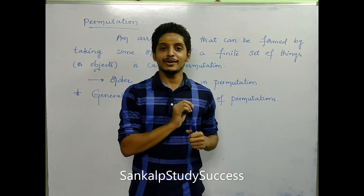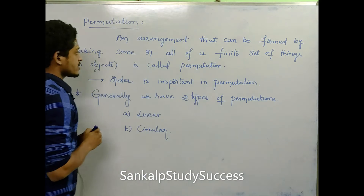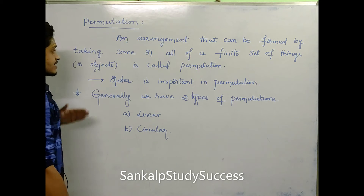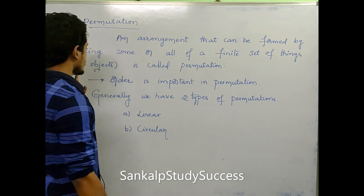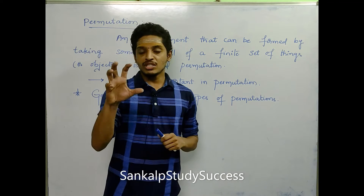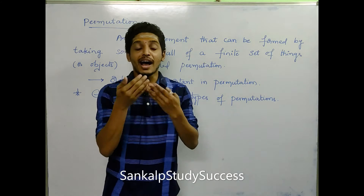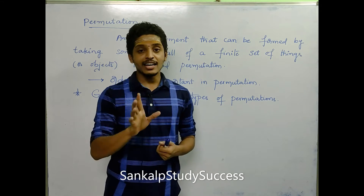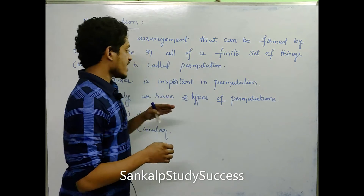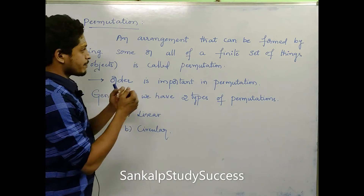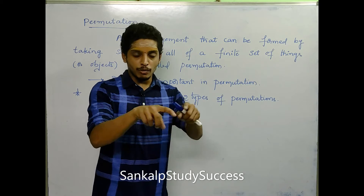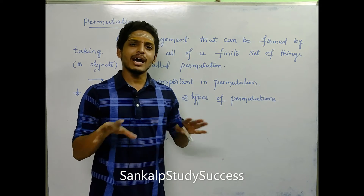First, we will look at the definition. An arrangement that can be formed by taking some or all of a finite set of things or objects is called permutation. That means, when we take a piece and arrange it, we will talk about permutations — a finite set of things or objects arranged in a concept or orientation.